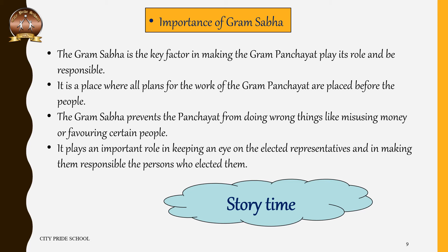This is how the Gram Sabha held at Hardas village solved two problems: first, the water problem, for which they are going to pursue watershed development; and second, the BPL list issue, where a genuinely poor person's name was not included but was brought to the notice of the Sarpanch. This is how the Gram Sabha works — people come to know what the Panchayat or the Sarpanch is doing, and the problems faced by the people are also discussed.